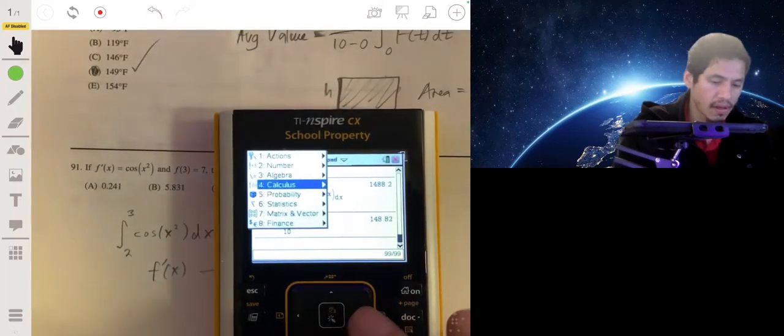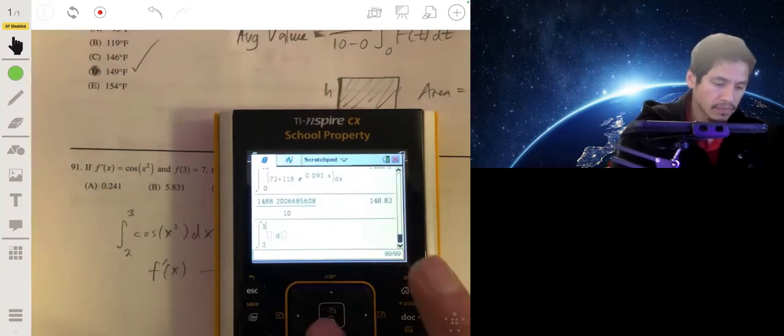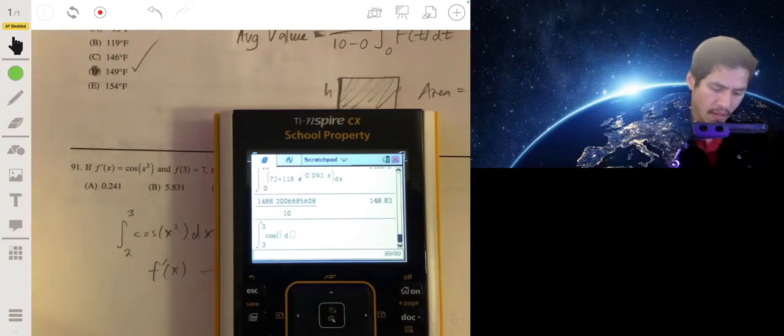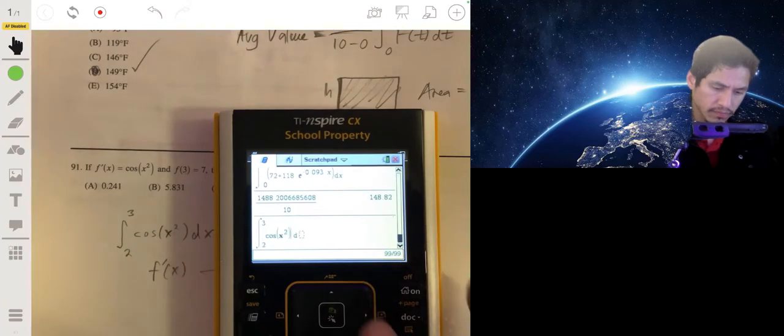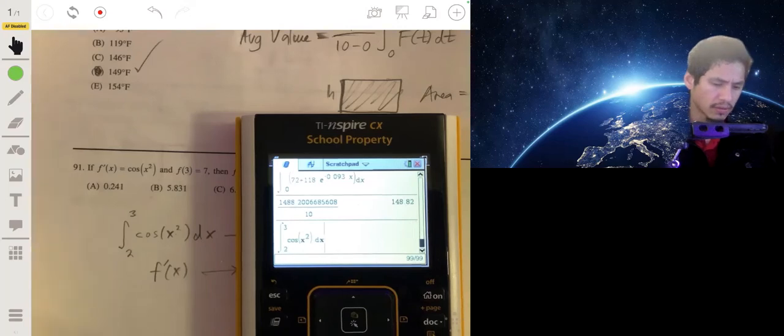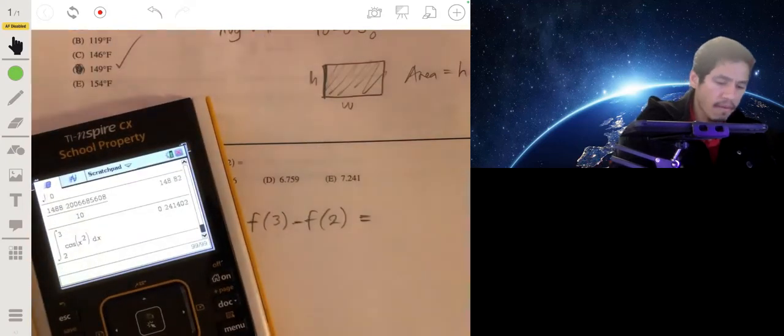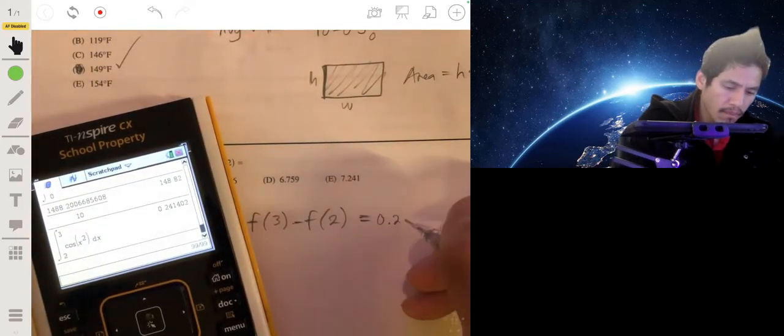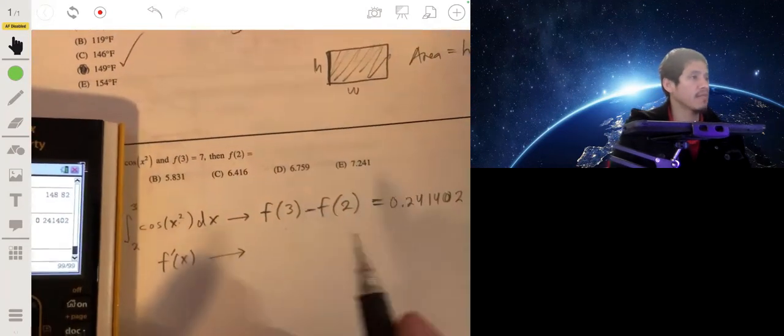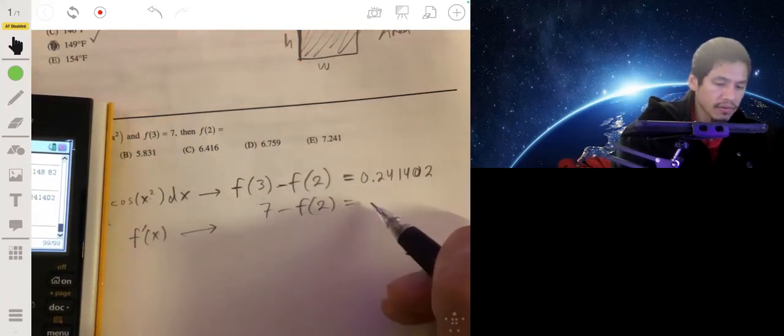Let's do that. Integrate this from 2 to 3. We get 0.24142. So then we have 0.24142 equals 7 minus f(2).